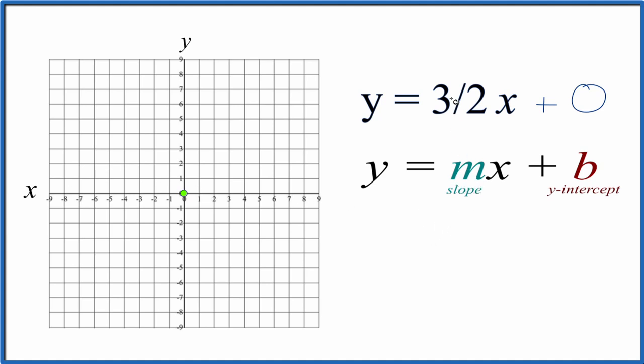For the slope, m, that's 3 over 2, 3 halves. And you can think of that as rise over run.